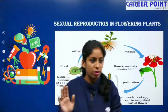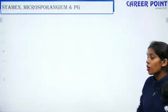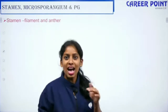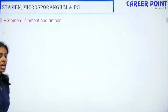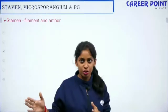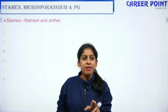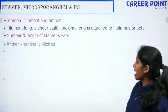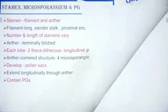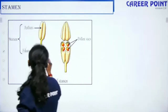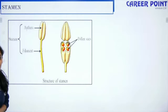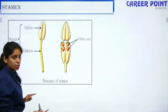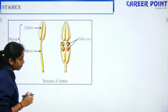The first topic is: Stamens, Microsporangium, and Pollen Grain. The androecium is the male reproductive part of the plant, represented by the stamen. The stamen has two parts: the filament and the anther. Looking at the structure of the stamen, here you have a filament and here you have an anther. The length of the filament can vary according to each plant — it is not fixed.